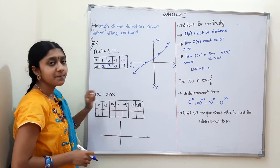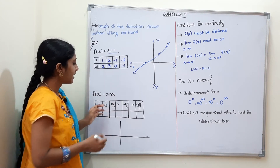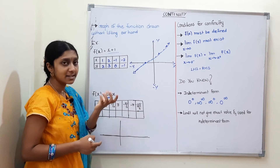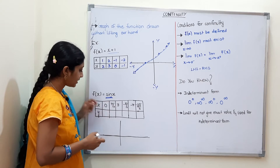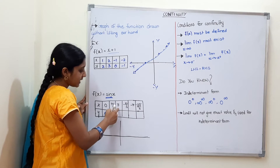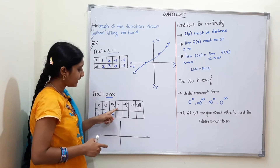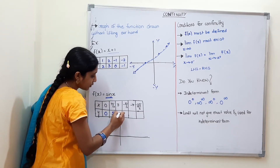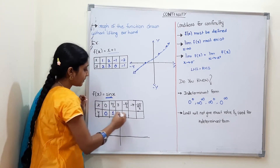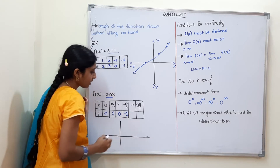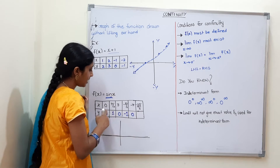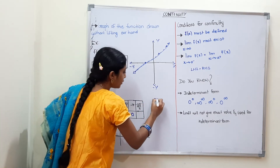Next is sin x. What is sin? It is a trigonometric function. We can tabulate key values: sin 0° = 0, sin 90° = 1, sin 180° = 0. We also have sin(−5π/2) giving a negative value, and sin(−π) = 0.